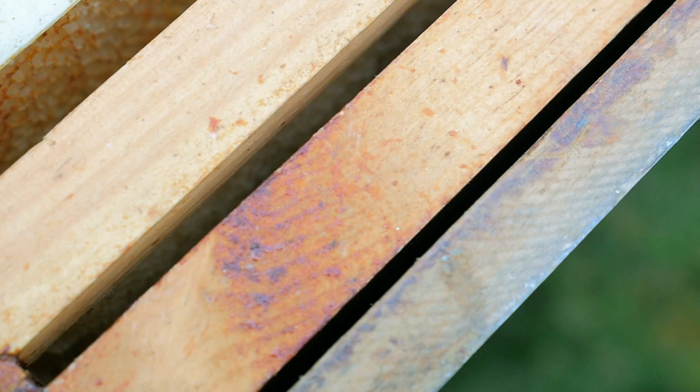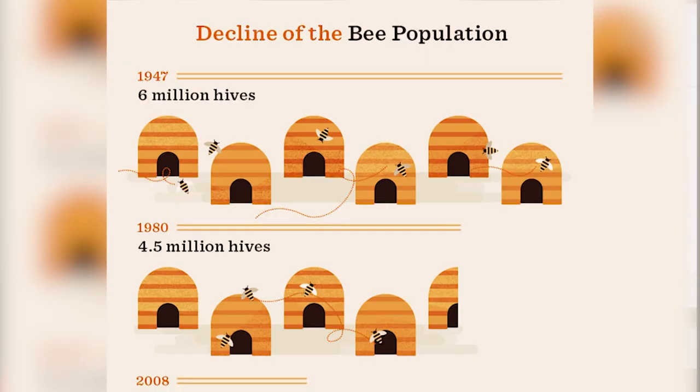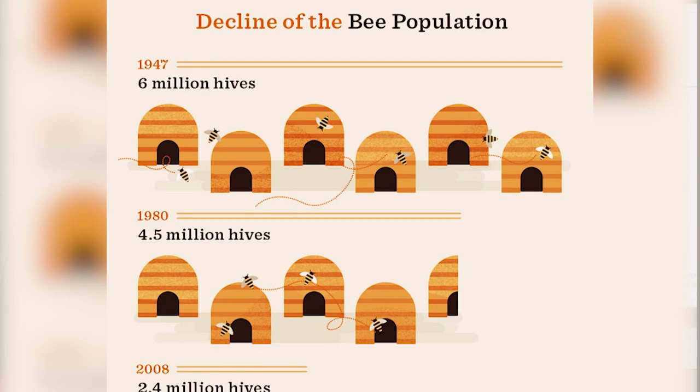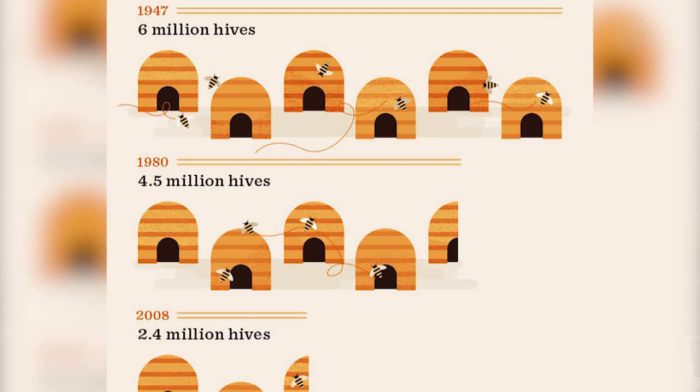Colony collapse disorder is a term that cropped up in the 2000s to explain the mysterious disappearance of worker bees leaving a hive and leaving the queen. But the term 'colony collapse' has been used to explain just annual losses of honeybee hives despite other different factors. So if you lose a hive due to improper care, use of miticides, or a disease, that might still catch a headline as colony collapse — even though we know exactly what caused it.